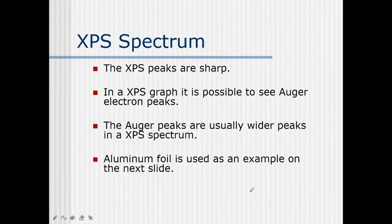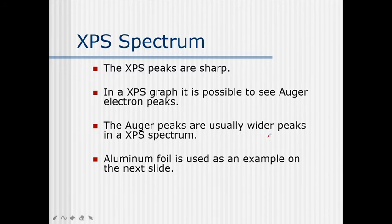What is an XPS spectrum? XPS peaks are sharp. In an XPS graph it is also possible to see auger electron peaks. The auger peaks are usually wider peaks in an XPS spectrum — XPS peaks are sharp whereas auger peaks are always wider.